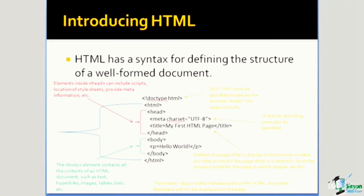So every tag — with only a couple of exceptions — every tag that is opened must also be closed to create a well-formed HTML document. In our example of this minimal HTML document, we have the HTML open and closed tags. Everything within those tags will be interpreted as HTML by the browser. The next section is the head section, and this contains information that is not displayed to the user, but provides data that can be used by search engines or the browser itself to provide additional information about the HTML page.